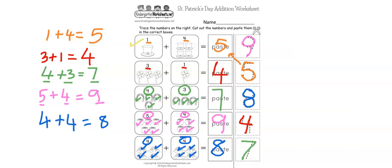Let's review: number 1 — 1 plus 4 equals 5. 3 plus 1 equals 4. 4 plus 3 equals 7. 5 plus 4 equals 9. And 4 plus 4 equals 8.